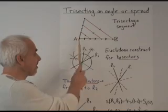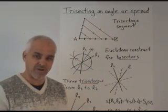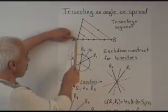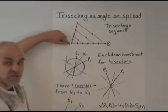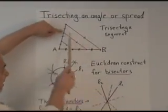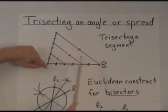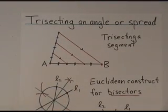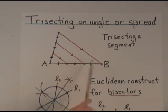Trisecting a segment is easy with ruler and compass. You go three steps in some other direction, draw parallels, and then you automatically divide your given segment into three pieces. That works equally well for five or seven or any other number of segments you want to divide something equally.